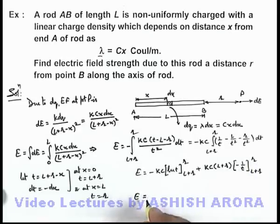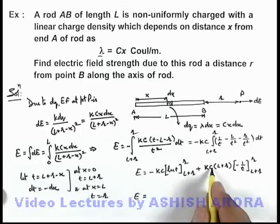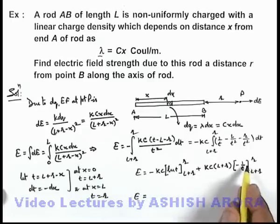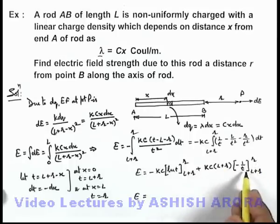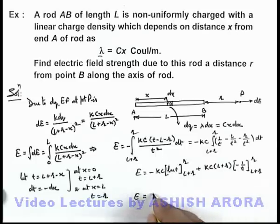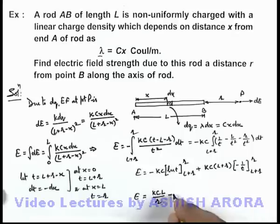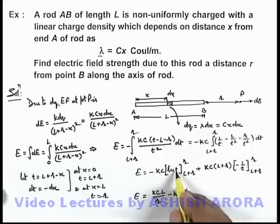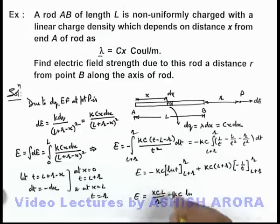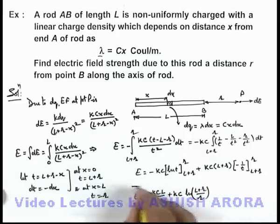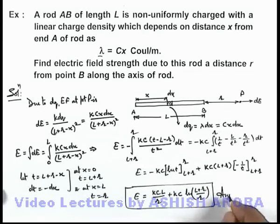Substituting the limits, the (l+r) terms cancel in one part, giving kc·[1/(l+r) − 1/r] · (l+r) = kc·(−l/r) from that part. Combining with the logarithmic term and simplifying signs, the final result for the electric field is: E = kc·l/r + kc·ln[(l+r)/r].